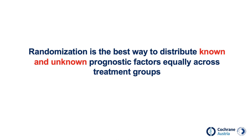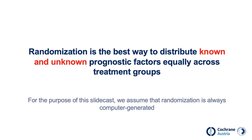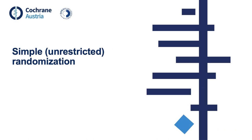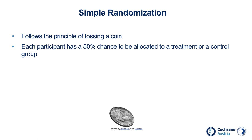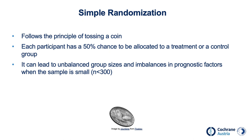Let's look at a few different randomization methods. For the purpose of this slide cast, we assume that randomization is always computer generated. Simple or unrestricted randomization is the easiest and purest form of random assignment, following the principle of tossing a coin. Each participant has a 50% chance to be allocated to a treatment or a control group. A common problem of simple randomization is that it can lead to unbalanced group sizes and imbalances in prognostic factors when the sample is smaller than 300 participants.